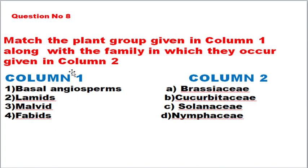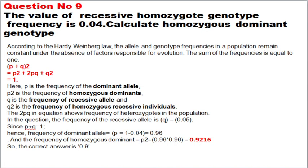The next question — probably only 10 to 12 percent of students, those who are MSc Botany candidates — will attempt this. Match the plant group in column one with the family in column two. Basal angiosperms belong to Nymphaeaceae family; Lamiales belong to Solanaceae (tomato and potato); Malvales belong to Brassicaceae (mustard family); and Fabales belong to Cucurbitaceae (cabbage and cauliflower). This is a pure MSc Botany question.